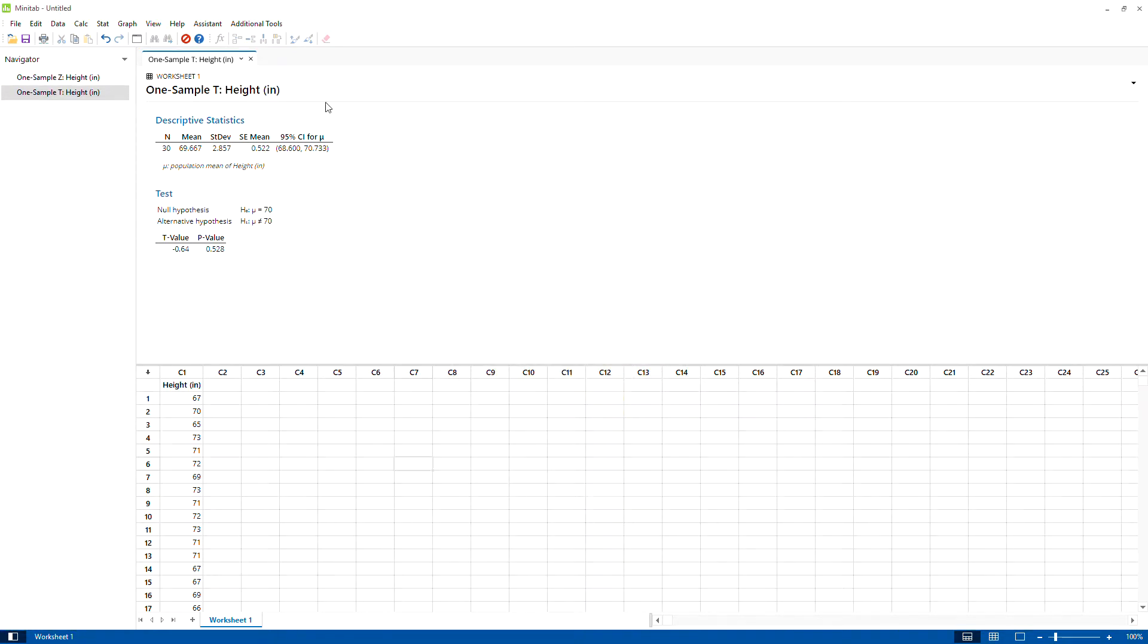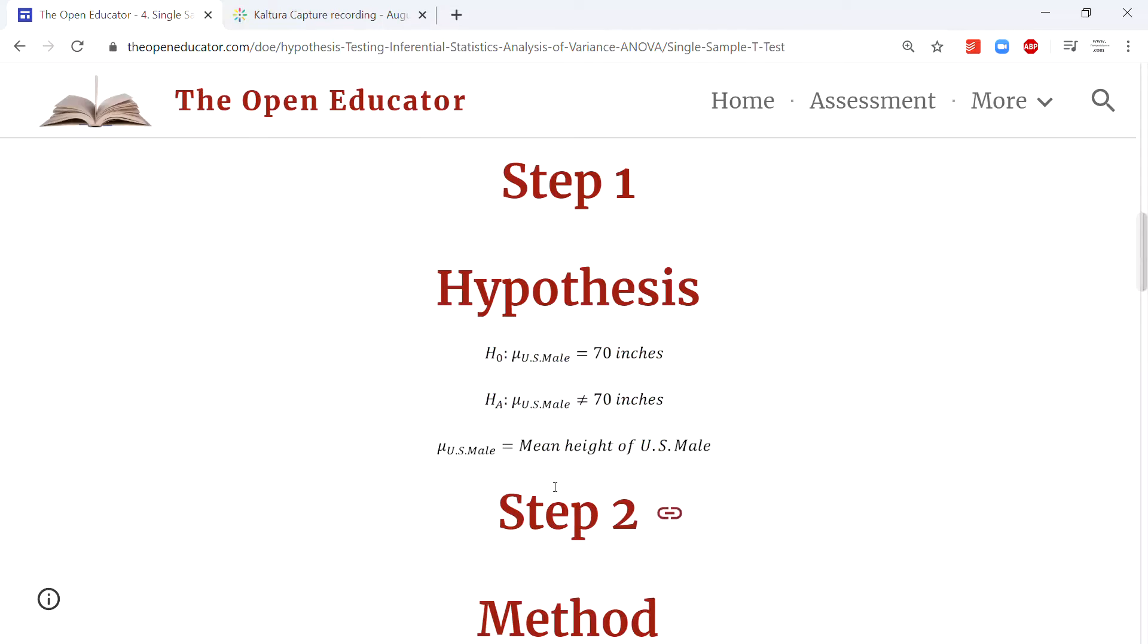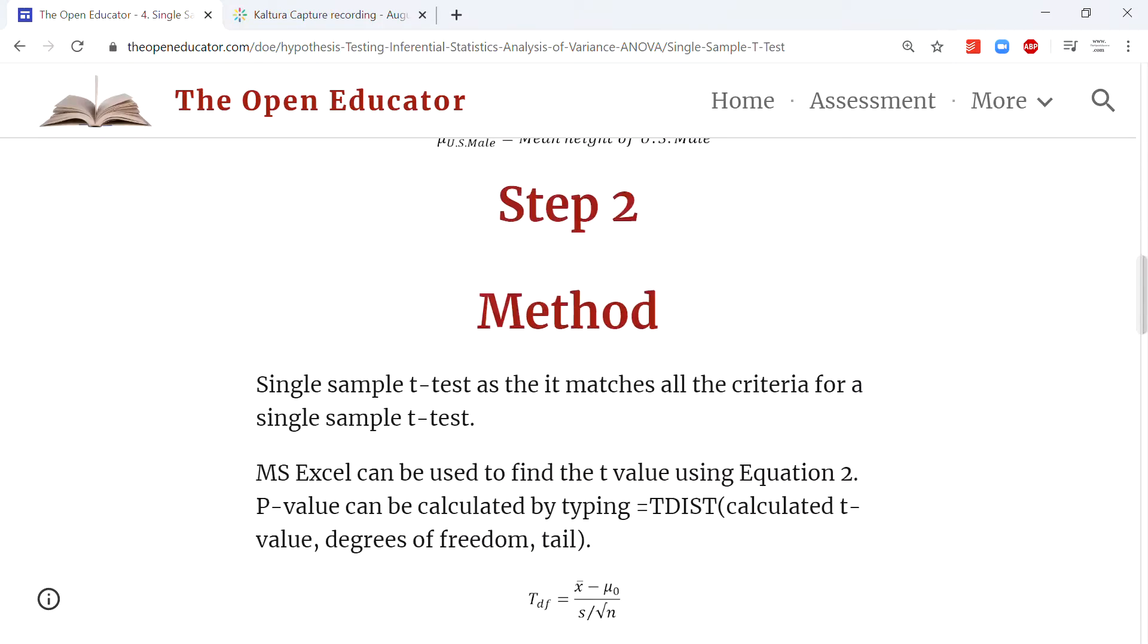This probability is calculated for the null hypothesis. This is the probability for the null hypothesis to happen. If it's too low a probability, anything less than 5%, we say it's not going to happen. 5% is considered too low probability. However, in this case, the probability value was calculated as about 0.528, so we will accept the null hypothesis.